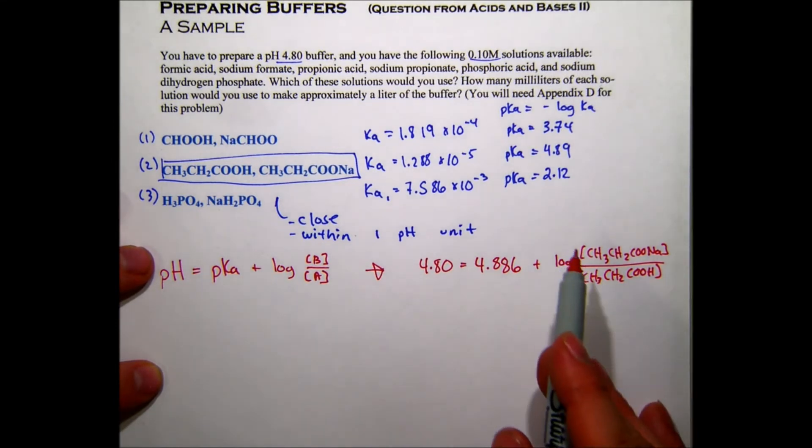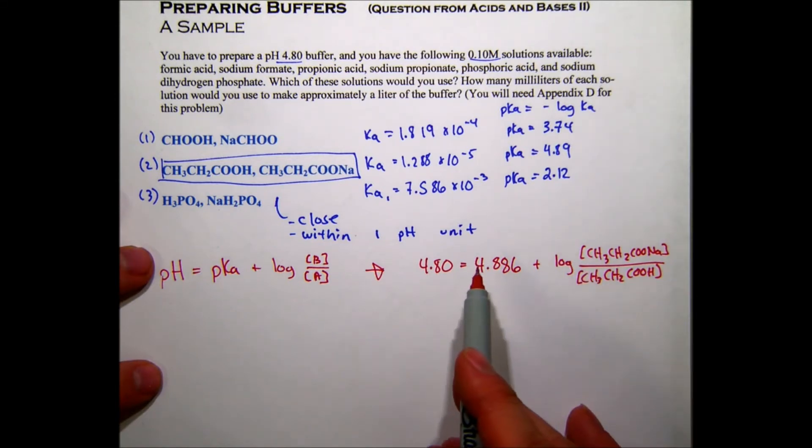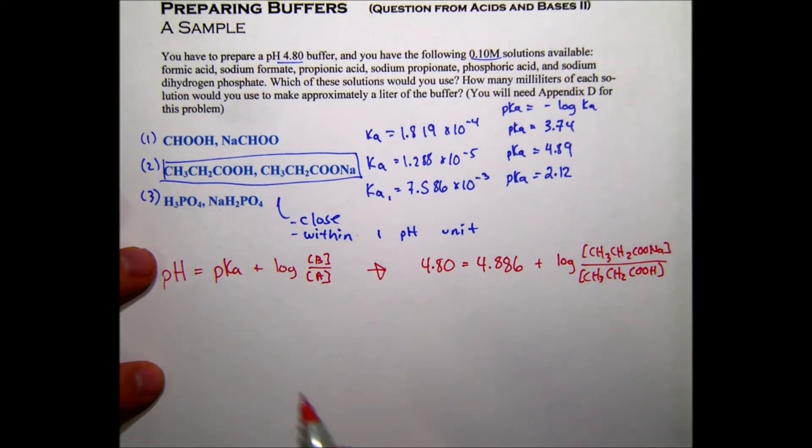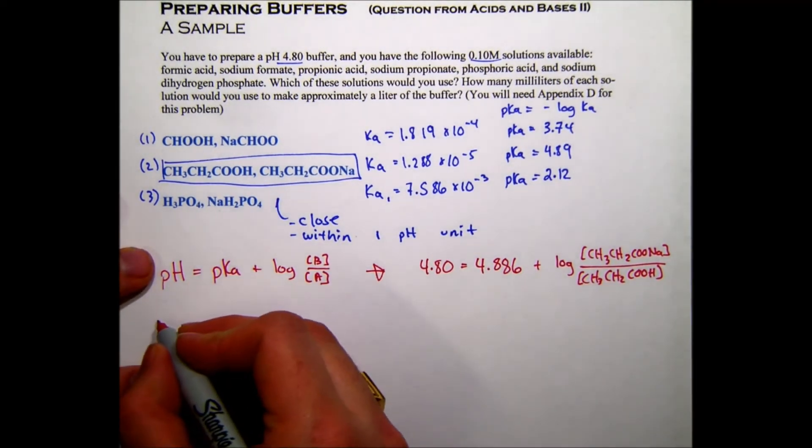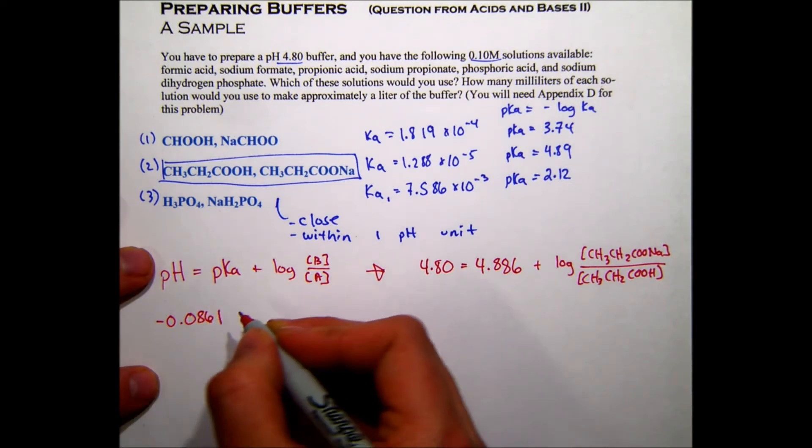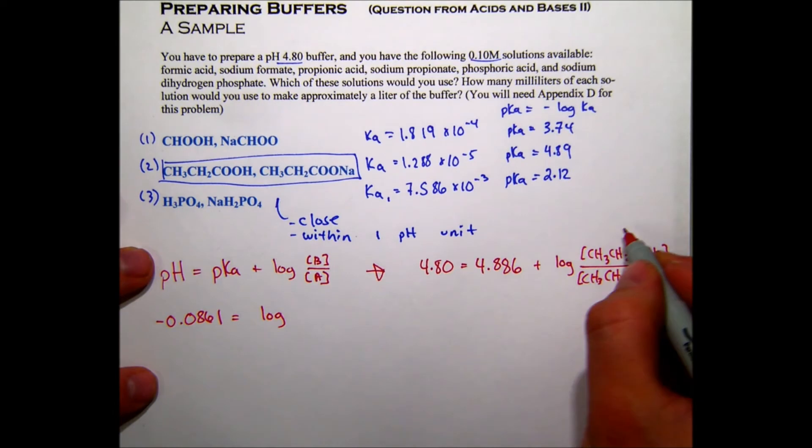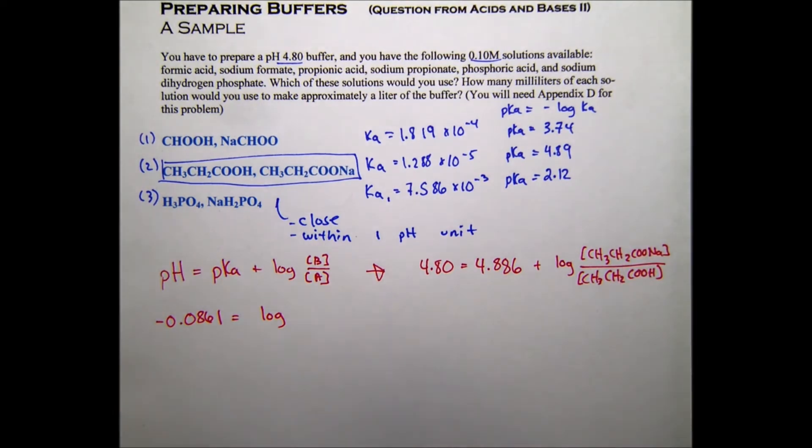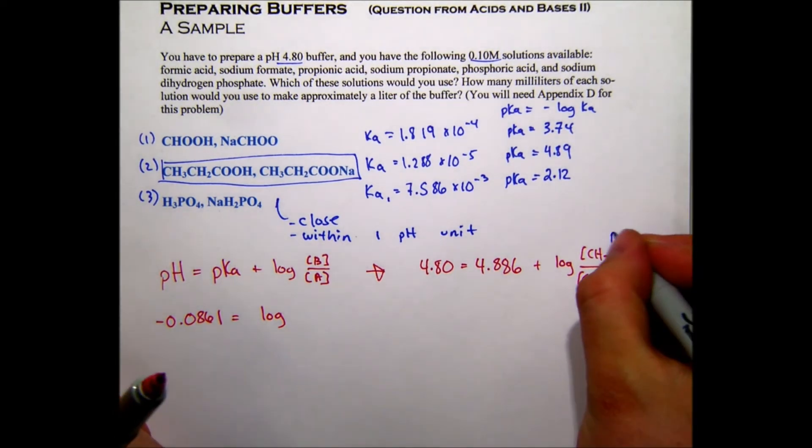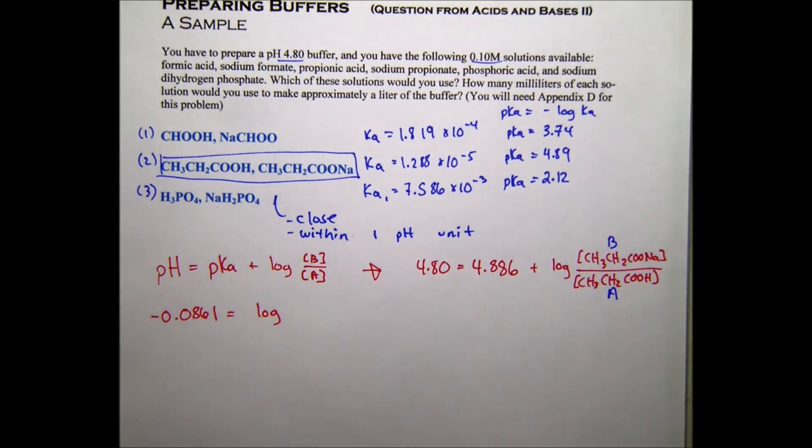So we're going to just rearrange this and solve for the log of the ratio. So basically, we're just going to subtract 4.886 from both sides. Remember that this is the base and that's the acid, just so I don't have to keep rewriting those formulas out.